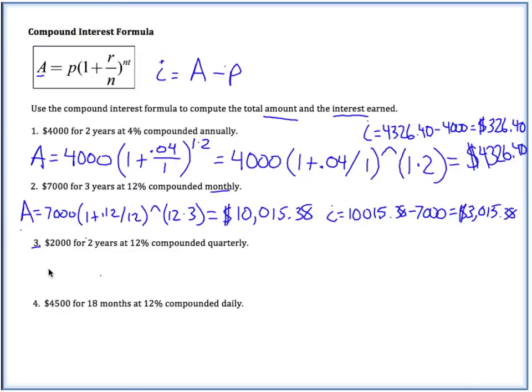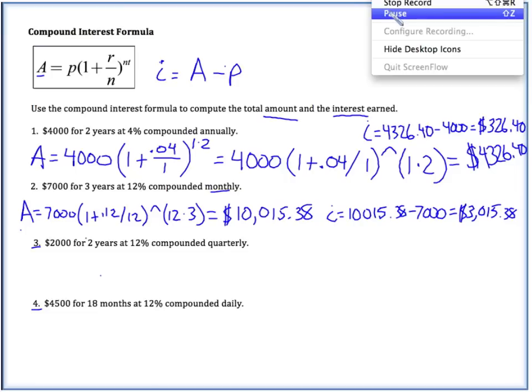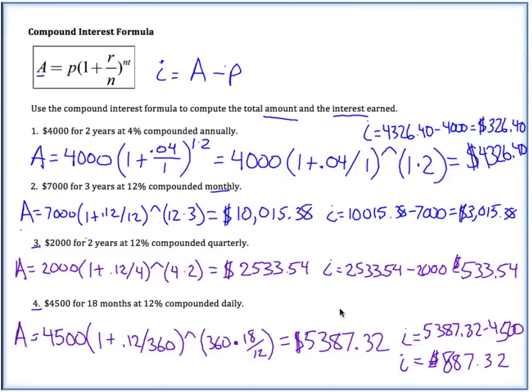All right, I want you to give the next two a try on your own. Go ahead and pause the video, and then come on back when you're done to check your work. All right, welcome back. For number three, your amount should have grown to $2,533.54. And your interest should have been $533.54.